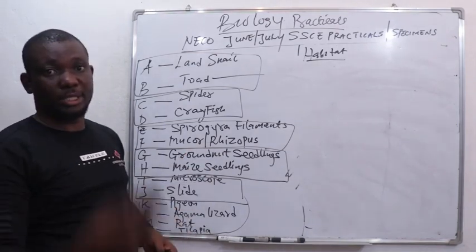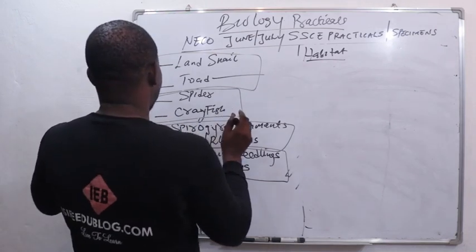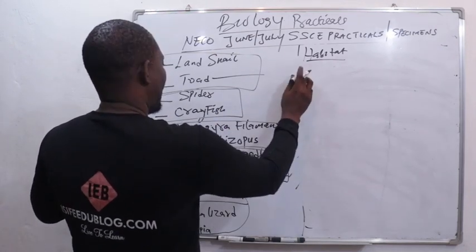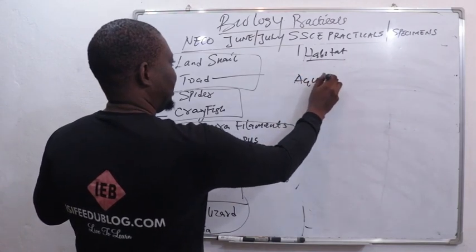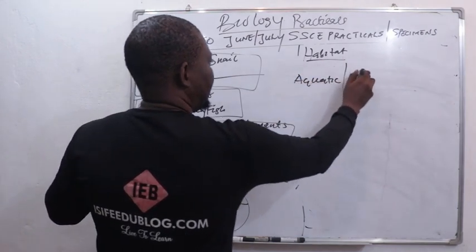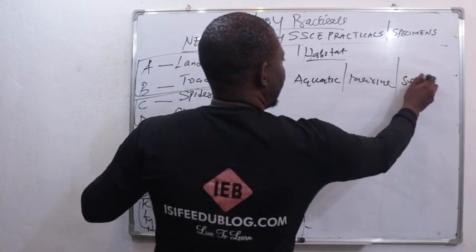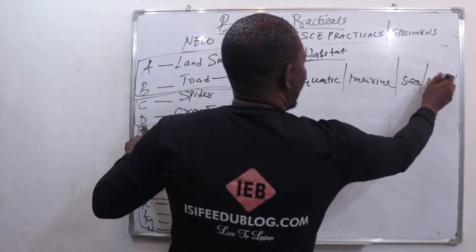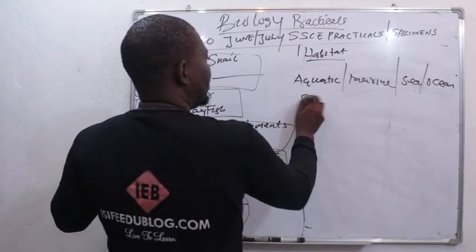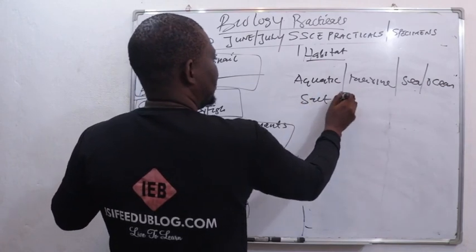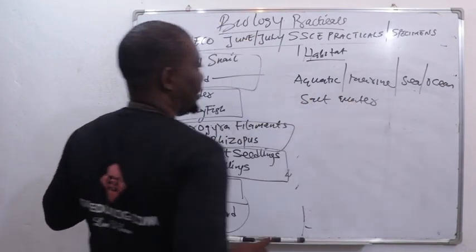So basically you have to state it. For specimen D, it is aquatic — aquatic is the first thing you state. Next you state marine. Next you state sea or ocean. They can also give it to you as saltwater. So these are the things you have to state.